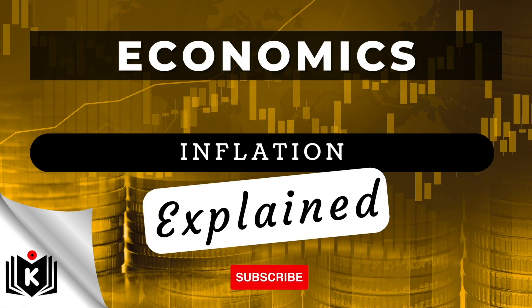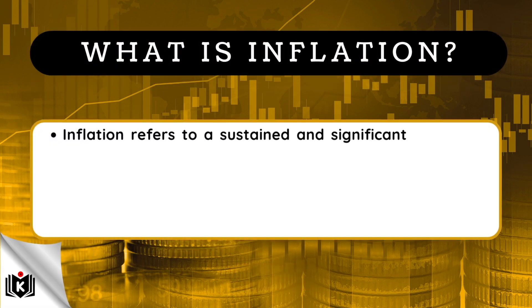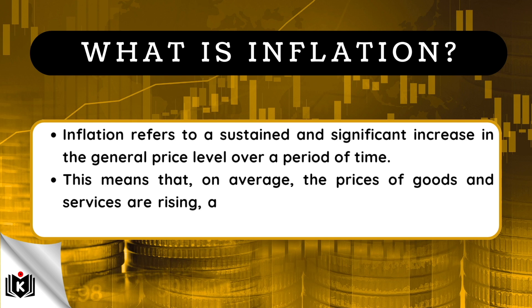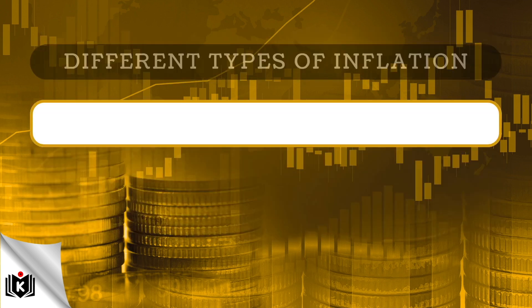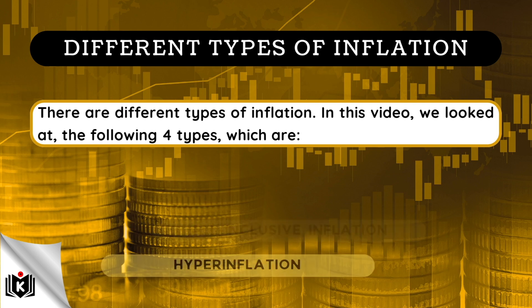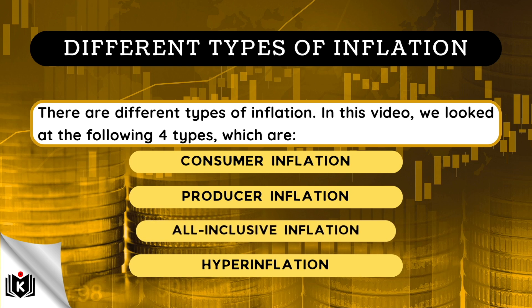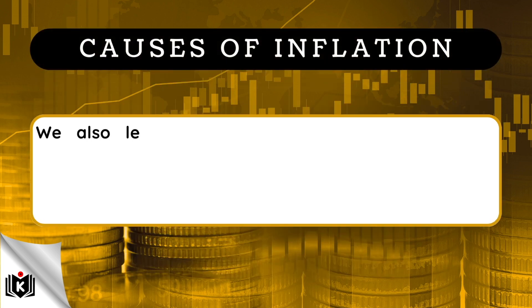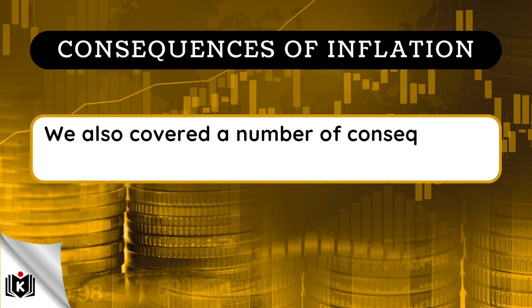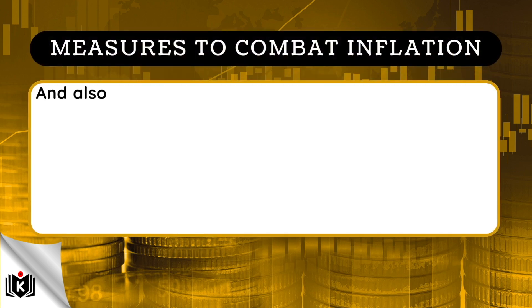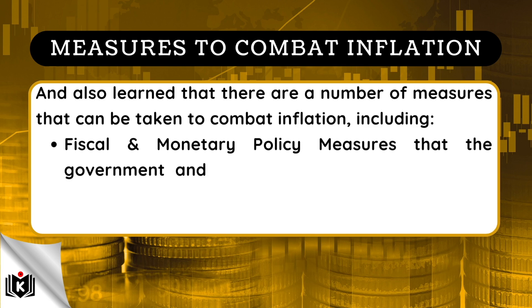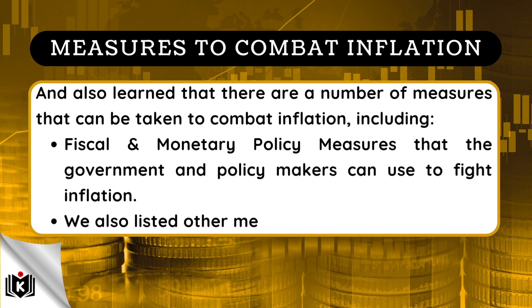Just to recap on what we covered in this video: inflation refers to a sustained and significant increase in the general price level over a period of time, meaning that on average the prices of goods and services are rising while the purchasing power of a unit of currency is decreasing. There are also different types of inflation — in this video we looked at consumer inflation, producer inflation, all-inclusive inflation, and hyperinflation. We also learned the various factors that cause inflation, including demand-pull inflation and cost-push inflation. We also covered a number of consequences as a result of inflation, and learned that there are a number of measures that can be taken to combat inflation, including fiscal and monetary policy measures that the government and policy makers can use to fight inflation, as well as other measures to be considered.